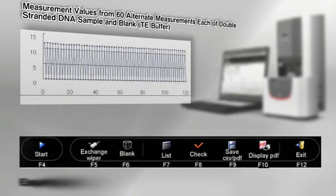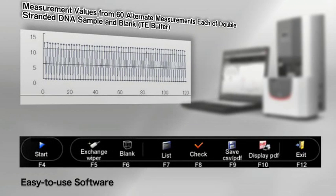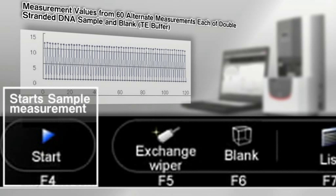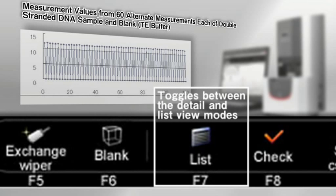Basic operations can be conveniently performed by clicking icons in the software or function keys on the instrument itself. Start measurement. Detail and list toggles between the detail and list view modes. Detail displays the analysis results and spectrum of the sample currently selected. List displays the analysis results of all samples in a table format.